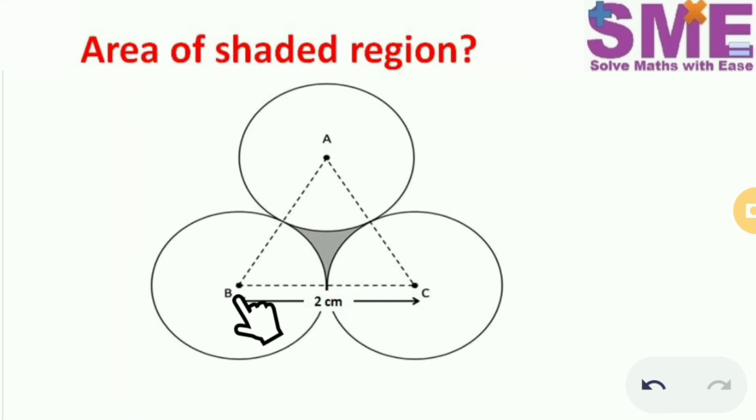The sides of this equilateral triangle are present at the center of each circle and the side of the equilateral triangle is 2 cm. We need to find the area of this shaded region.